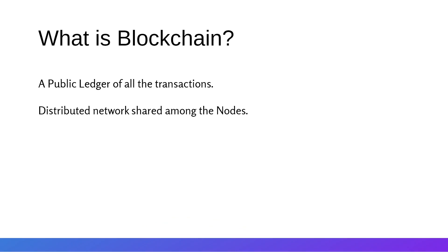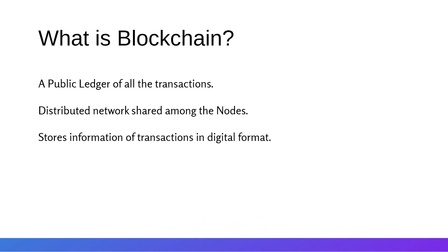Blockchain is a distributed network shared among the nodes of a computer network. Each node is connected to the previous and next node, forming a chain — hence we call it a blockchain. Each node is simply a computer working on the blockchain network, storing transaction information in digital format. Blockchains are best known for their role in cryptocurrency systems such as Bitcoin.